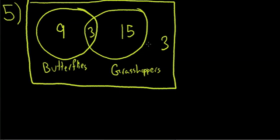The Venn diagram above shows the distribution of 30 science students who studied butterflies, grasshoppers, both, or neither. What percent of the students studied butterflies only? So what's a percentage? It's a certain amount out of the total, so our total here is 30.